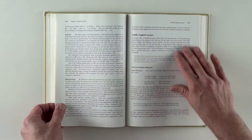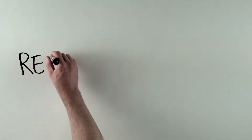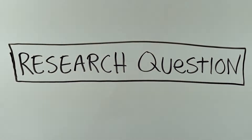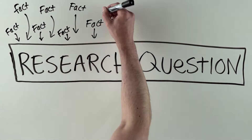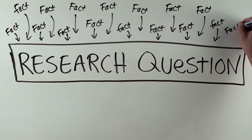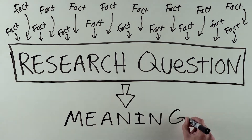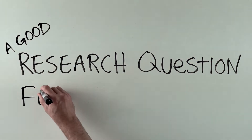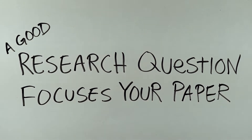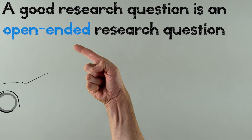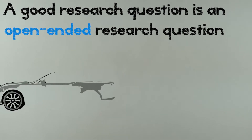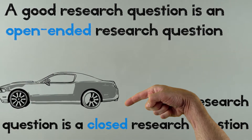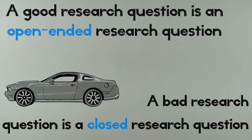Before you can move forward, that topic needs to be framed as a research question. A good research question is what turns 'here are a bunch of facts I learned about car accidents' into something meaningful. A research question describes what you want your research, and therefore your paper, to address. But some kinds of questions are better than others: a good research question is an open-ended research question, and a bad research question is a closed research question.